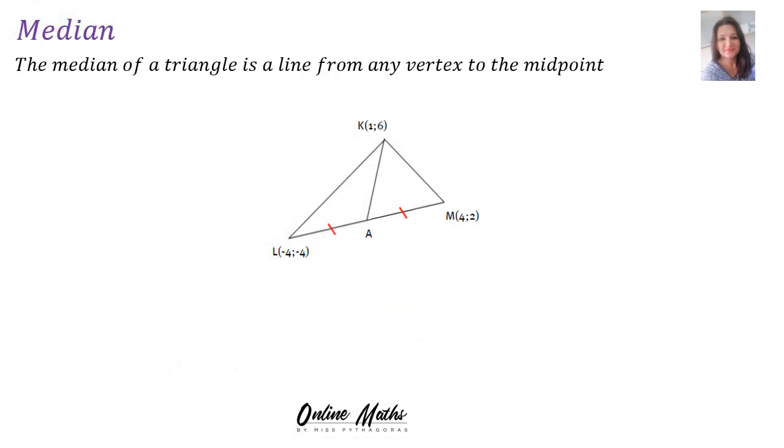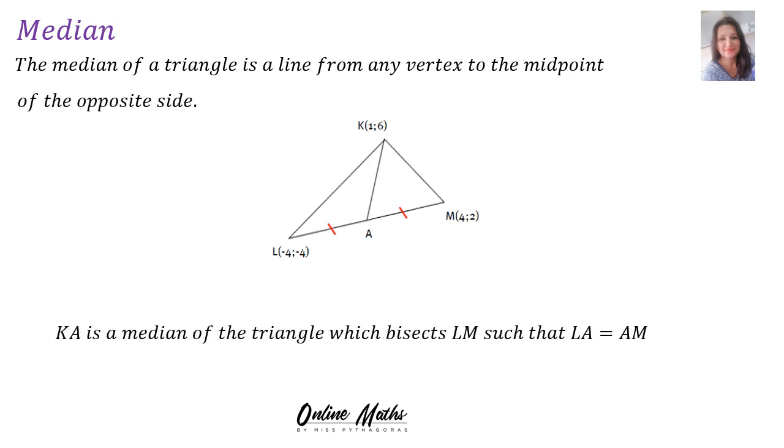The median of a triangle is a line from any vertex to the midpoint of the opposite side. KA is the median of the triangle which bisects LM such that LA is equal to AM.